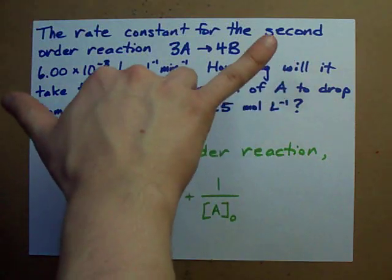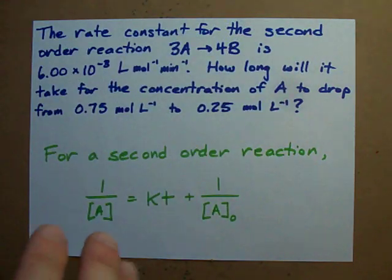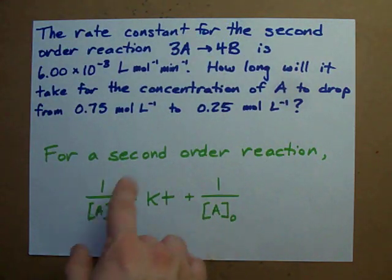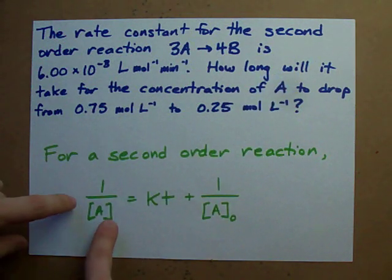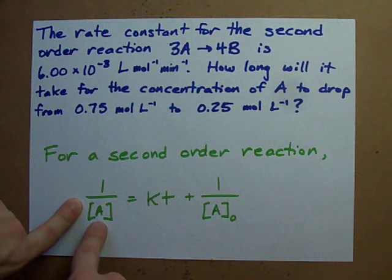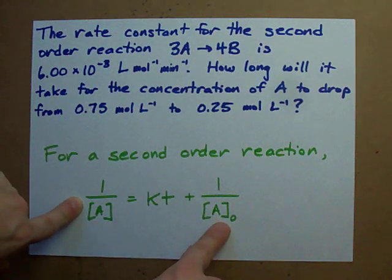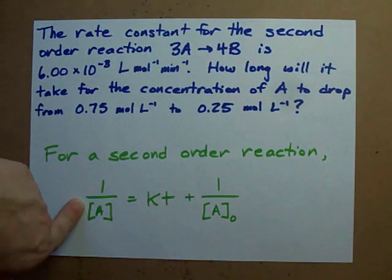In this case of a second order reaction, all you need is the generalized or integrated rate law. For a second order reaction, it is this, where A is the reacting concentration, this is the initial concentration, K is the rate constant, and T is time.